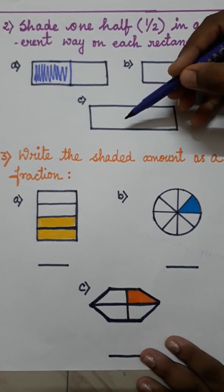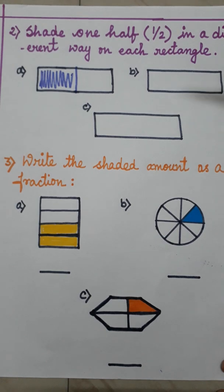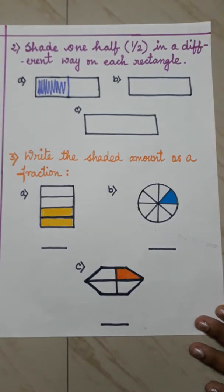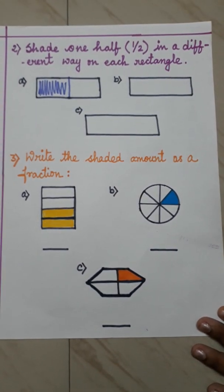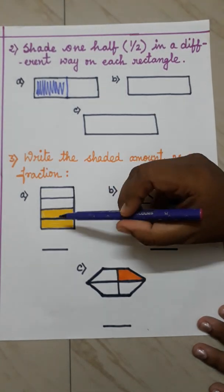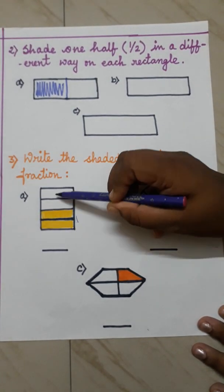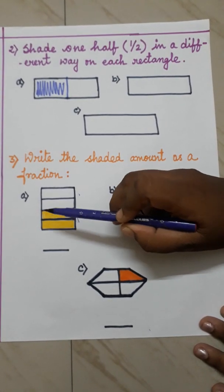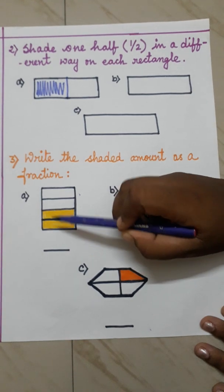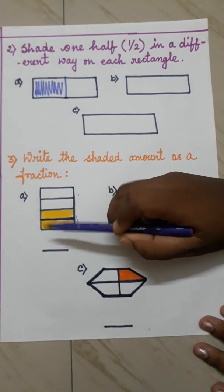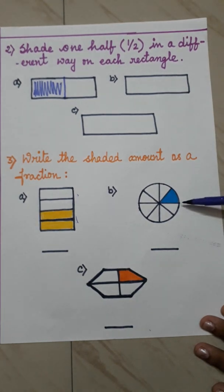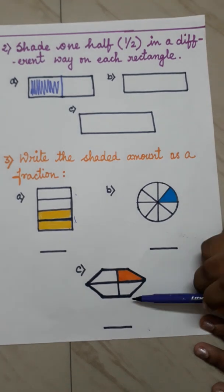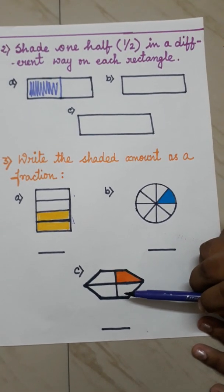The next rectangle should be divided differently, and the third rectangle also differently. You have to write this question in your copy and complete it. For question number 3, write the shaded amount as a fraction. A figure is given — you have to draw it in your math copy and write the fraction of the shaded part for each figure.